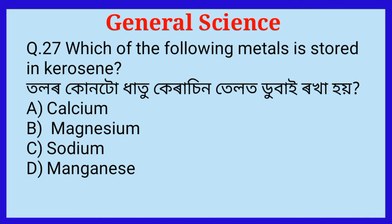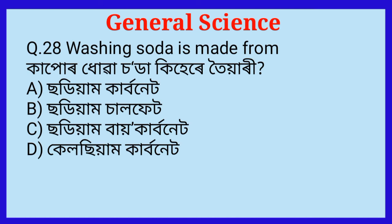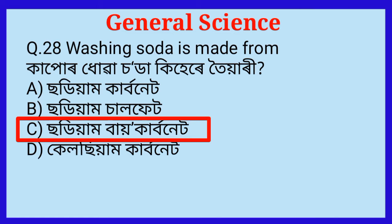Question number twenty-seven: Which of the following metals is stored in kerosene? Which metal is kept in kerosene oil? The answer is option C, sodium. Question number twenty-eight: Washing soda is made from which compound? The answer is option C, sodium bicarbonate.